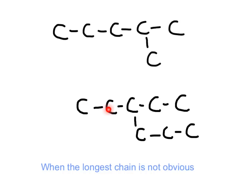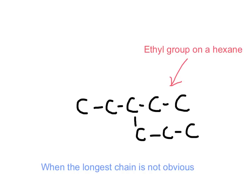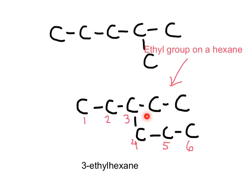Let's trace it: counting carefully in both directions, the chain is six carbons long. Now we need to label the carbons and assign a name to the branch. It is six carbons long, therefore it's a hexane, and the branch is two carbons long, so it's an ethyl group. Since ethyl is on carbon number three, the name of this substance is 3-ethylhexane. Here we have the skeletal structure for this compound.